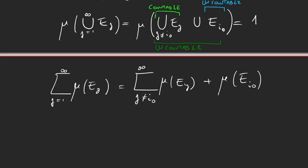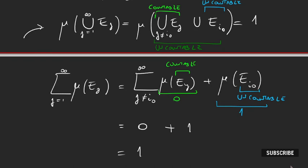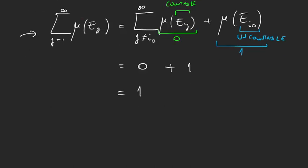And because all these E sub j's are countable, then the measure is zero. And we're adding zero plus zero plus zero infinitely many times. This first term will give us zero. But E sub i0 had countable complement, and so it is uncountable. So mu of an uncountable set will give us one. So we have zero from this set and one here. Zero plus one is one. And so we have that mu of the union is equal to the sum of the mu's.